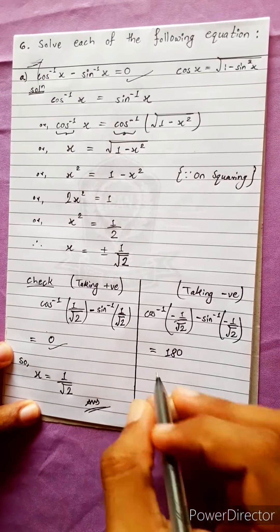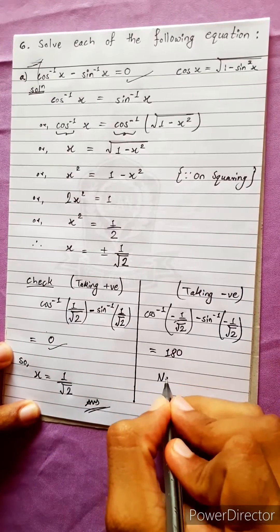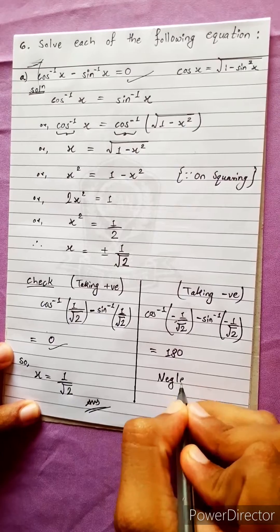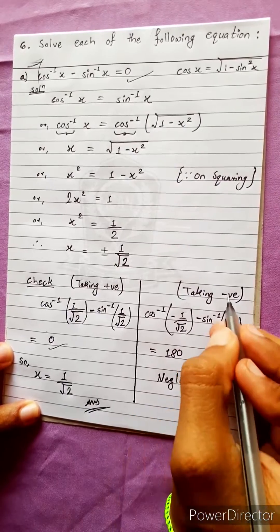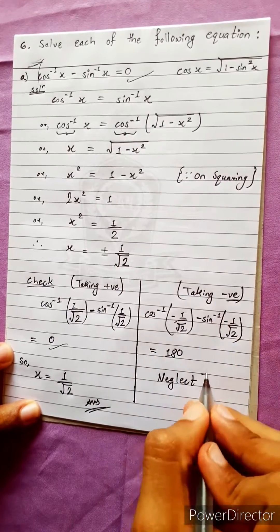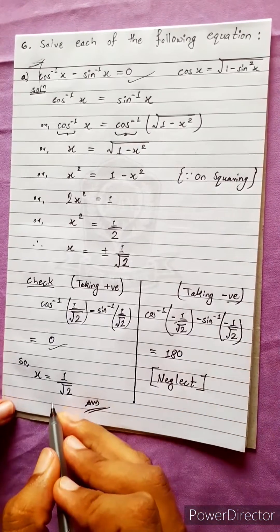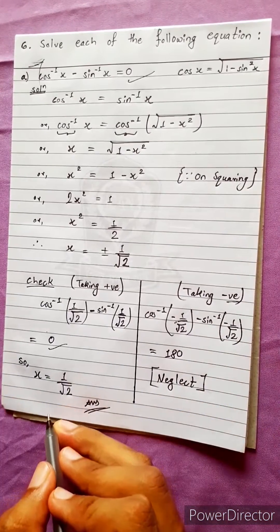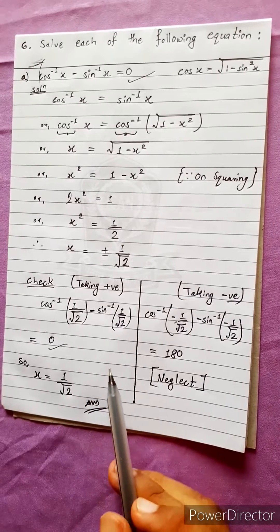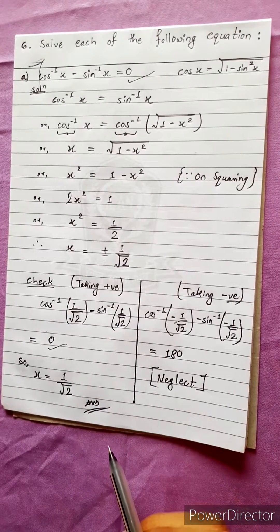Taking the negative value, x equals minus 1 by under root 2 is neglected. So the final answer is x equals 1 by under root 2. Now get ready for the next question.